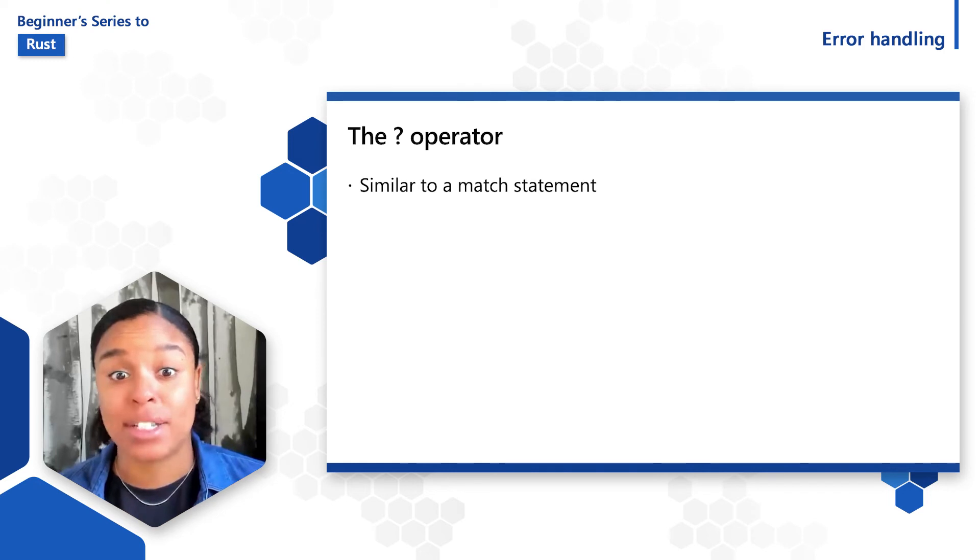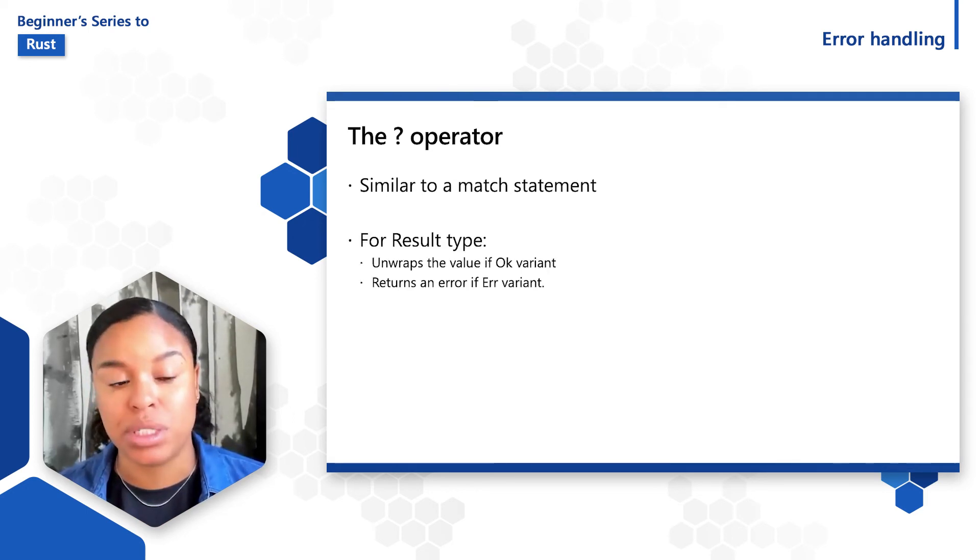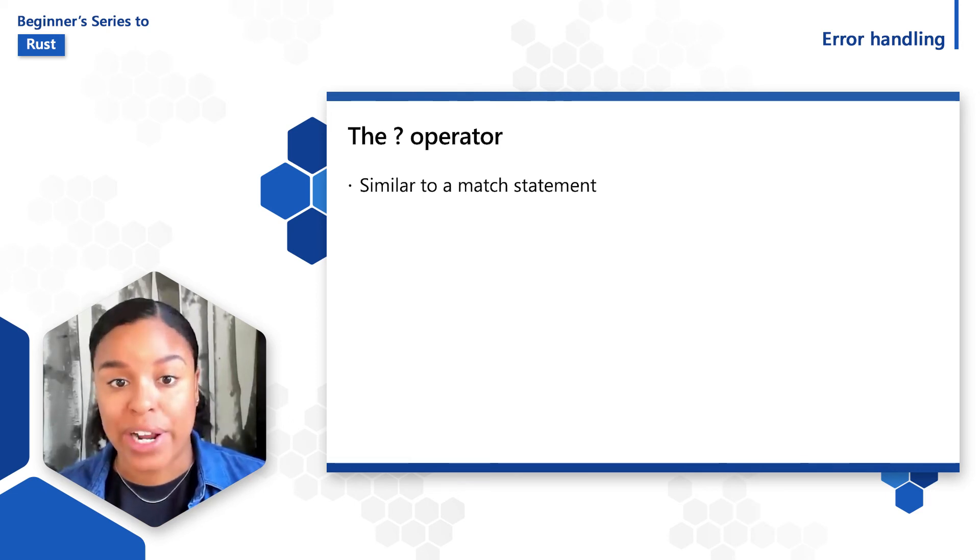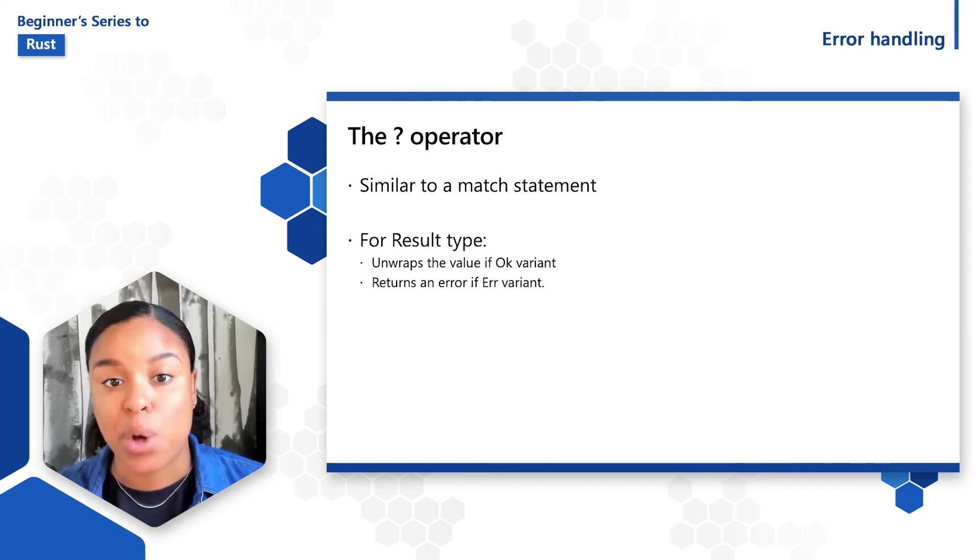The last thing I want to call out is the question mark operator. This operator works similar to how match statements work, but eliminates the need for an entire statement and only a question mark is used. The question mark operator applies to a result value and unwraps the inner value if it was the okay variant. If the result is the error variant, it returns from the point of the function you're currently in.